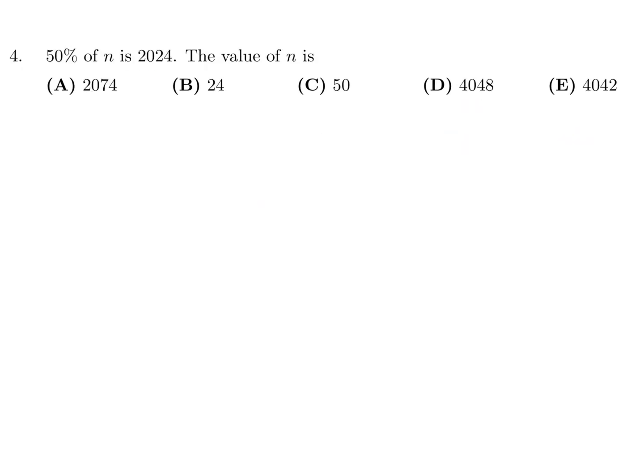50% of N is 2024, the value of N is. So 0.5N is equal to 2024, so that's the math. And therefore multiply both sides by 2, and when we do that we get N is equal to 4048. And that would be D.